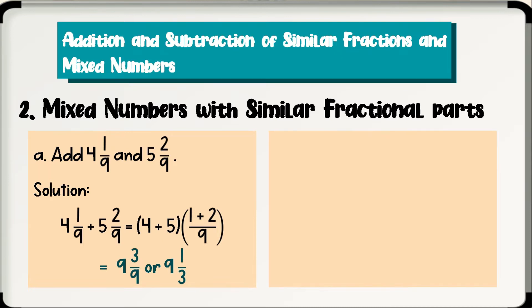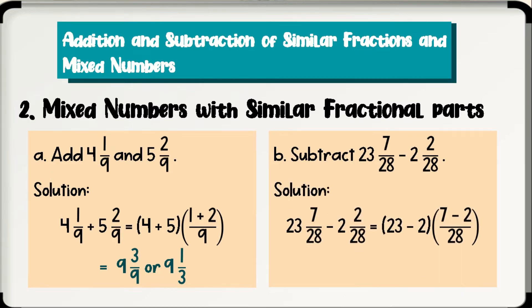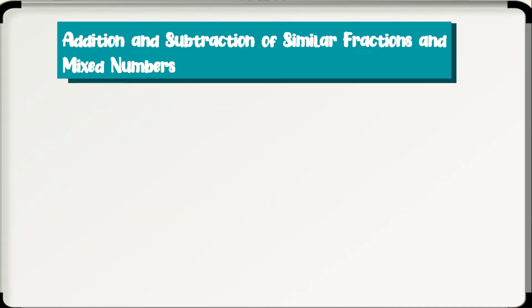Next example: subtract 23 and 7 over 28 minus 2 and 2 over 28. We will just subtract the whole numbers — 23 minus 2, that will be 21. Then we subtract the numerators 7 and 2, that will be 5, and copy the common denominator, which is 28. Since this is already in lowest term, 21 and 5 over 28 will be the final answer.